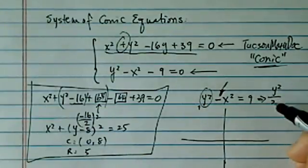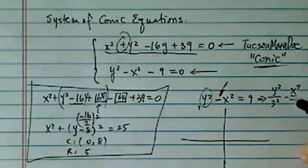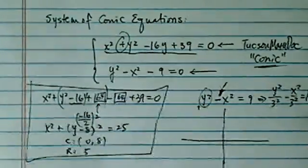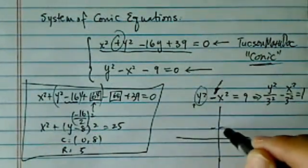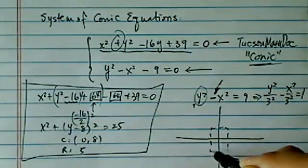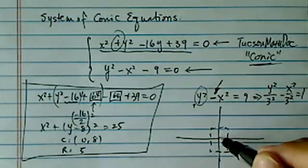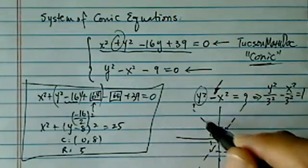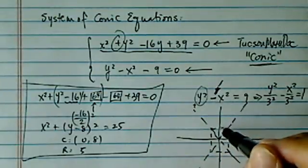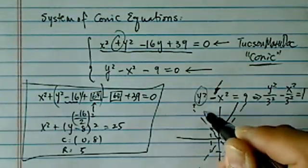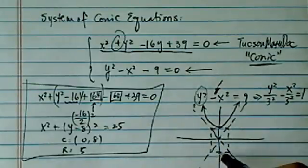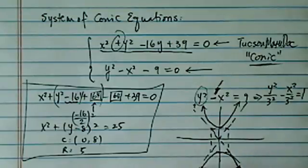So you have y squared over 3 squared minus x squared over 3 squared equal to 1, which tells us the asymptotes is actually a square box. It's the best of my square I can get. So I'm drawing an asymptote to give you some idea what this curve is going to look like. It's a hyperbola facing up and down, or facing up north and south.